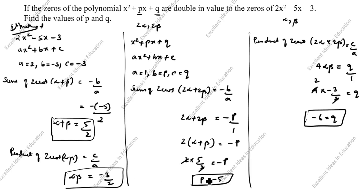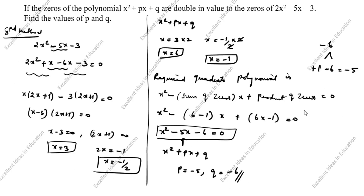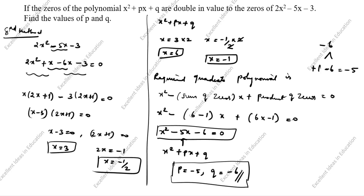In the first method, p equals minus 5 and q equals minus 6. This is the second method. The answer is the same but the concept is different. Whichever method is easiest for you, you can follow. Thanks for watching this video.